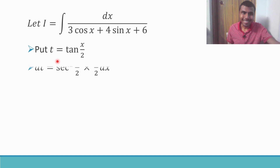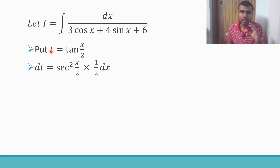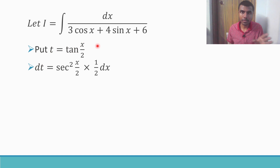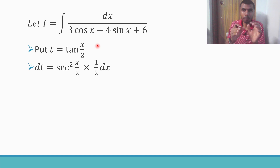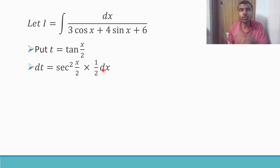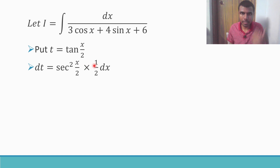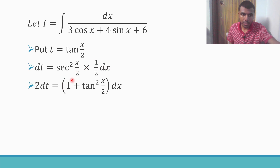Now listen carefully. dt is nothing but secant squared(x/2) times one-half dx. I'm differentiating both sides: on the left side I get dt, and derivative of tan(x) is secant squared x. Since I have x/2 instead of x, I get secant squared(x/2), and by the chain rule I multiply by the derivative of x/2, which is one-half dx.